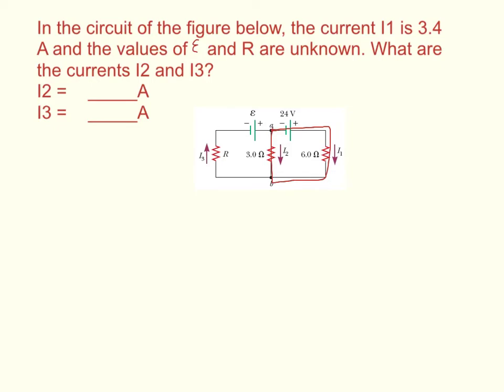On the first, we're going with the current, so we have 24, positive 24, or we'll just call it V1. Then we're going to go across the resistor with the current.